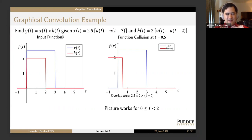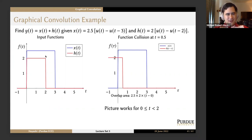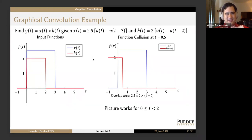Find y(t) = x(t) convolved with h(t), given that x(t) = 2.5 times [u(t) − u(t−3)] and h(t) = 2 times [u(t) − u(t−2)]. These are two rectangular pulses — x(t) in blue and h(t) in red, drawn on the same axes just to save space. For any sort of graphical convolution, we're going to give you relatively simple functions: impulses, steps, ramps, maybe a parabola. We shouldn't be asking you to convolve something like a Gaussian or bilateral exponential decay — those are not easy with graphical methods.